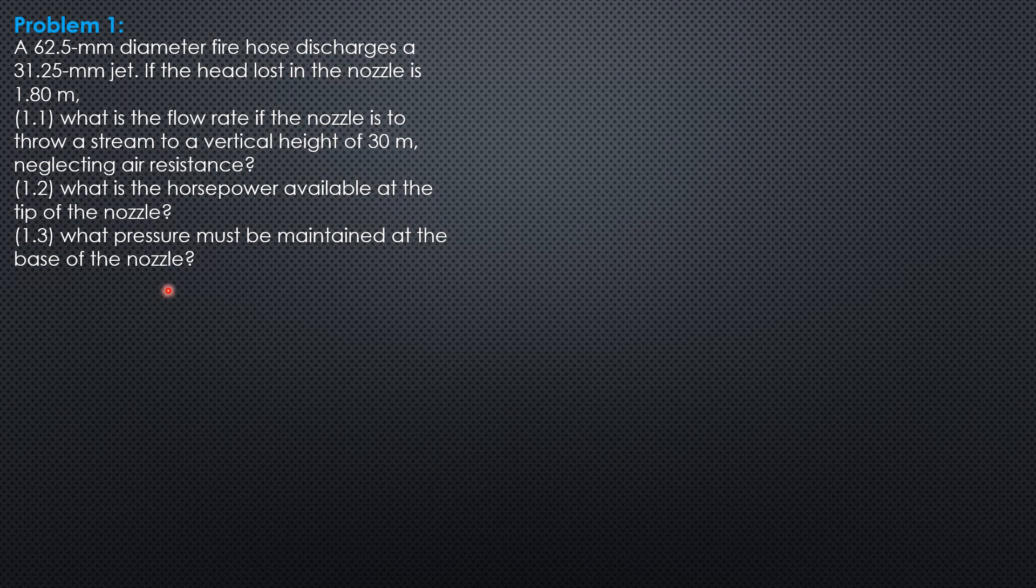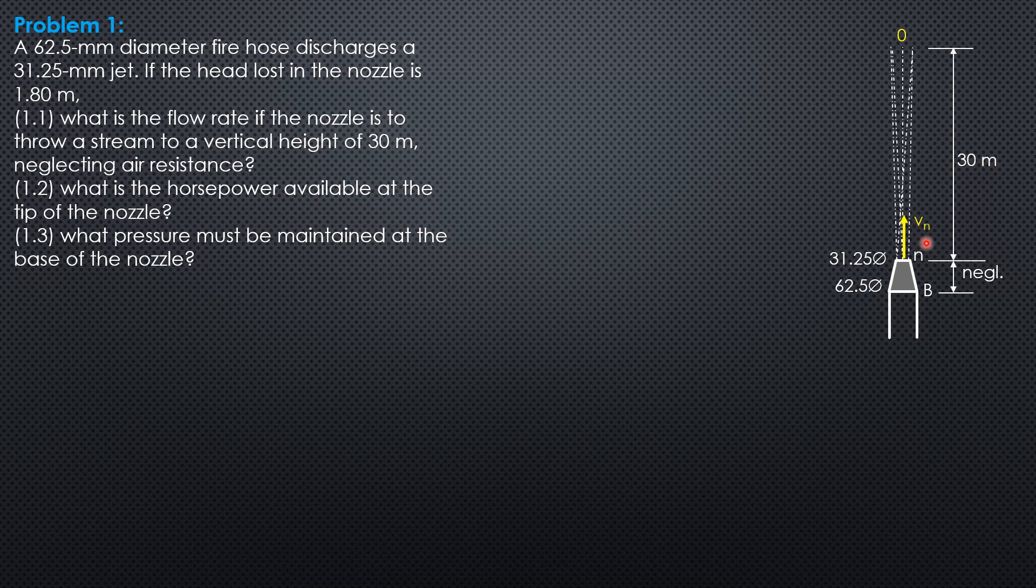Let's draw the figure to help analyze the situation. This 30 meters is the velocity head at n by experience. Vn squared over 2g equals 30. From there, we can compute V sub n, velocity at the nozzle tip, of 24.26 meters per second.